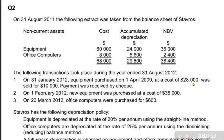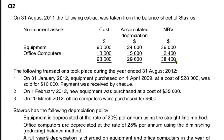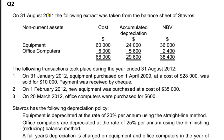Let us do some other practice for making a T account for the cost of non-current assets. We have another question — a past paper question. On 31st August 2011, that is their year end, the following extract from the balance sheet is given. Extract means it's not a complete balance sheet but just one part of it. We have only the non-current asset section with three columns: cost, accumulated depreciation, and net book value. Equipment costed 60,000 with total depreciation of 24,000 leaving NBV of 36,000. The current year is August 2012 and there are three transactions.